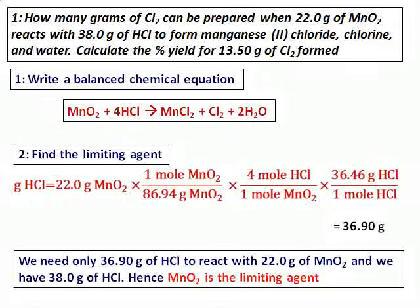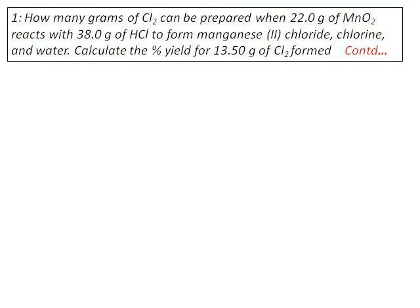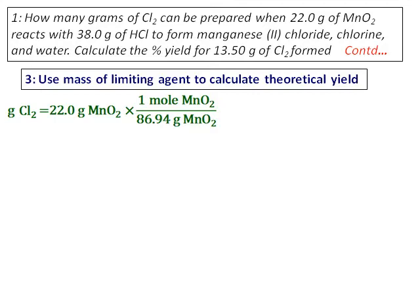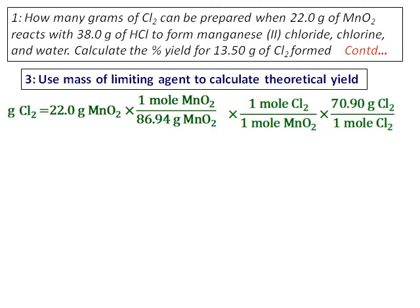Now I will use the mass of the limiting agent to calculate the theoretical yield — how much Cl₂ will be formed. With MnO₂ as the limiting agent, I convert grams of MnO₂ to moles, then using the equation convert to moles of Cl₂, and then to grams of Cl₂. The theoretical yield comes out to 17.94 grams. The actual yield given is 13.50 grams, and hence the percentage yield can be calculated.